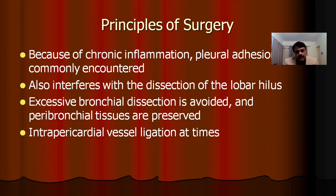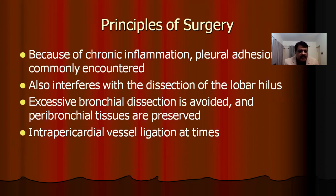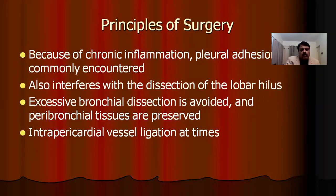Continuing with the principles: remember this is an inflammatory disease and there could be severe pleural adhesions, as well as adhesions in the mediastinum, wherein dissection of the lobar hilum becomes a challenge. Excessive bronchial dissection should be avoided and peribronchial tissues are preserved to avoid a bronchopleural fistula. If the dissection becomes difficult, one can consider intrapericardial ligation.